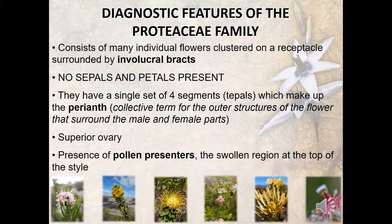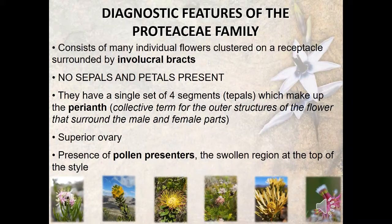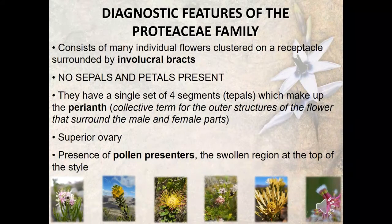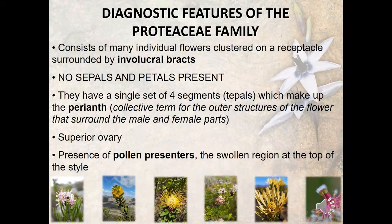There are no sepals and petals present — if you watched the previous video we explained what sepals and petals are. Proteaceae have a single set of four segments of tepals which make up the perianth. The perianth is a collective term for all the outer structures of the flower that surround the male and female parts. This terminology is important because when you look into the literature, references are made to the length or hairiness of the perianth, so you have to understand what the perianth actually means.